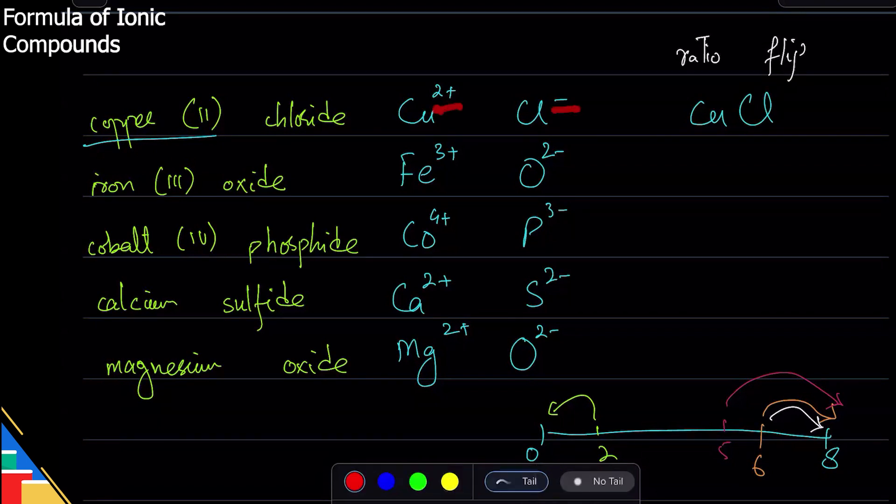You flip it - you get one and two. That's going to be Cu one Cl two. We don't need to write one, so we can skip it. But notice that now I'm writing it at the bottom.